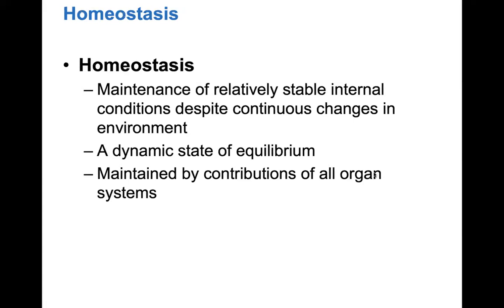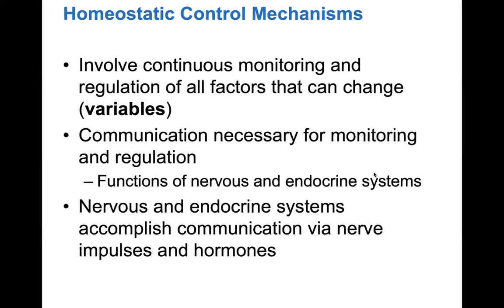Homeostasis is the maintenance of relatively stable internal conditions despite continuous changes in the environment. It is a dynamic state of equilibrium maintained by contributions of all organ systems. Homeostatic control mechanisms involve continuous monitoring and regulation of all factors — called variables — that can change. Communication is necessary for this monitoring and regulation, involving the nervous and endocrine systems through nerve impulses and chemical messengers called hormones.